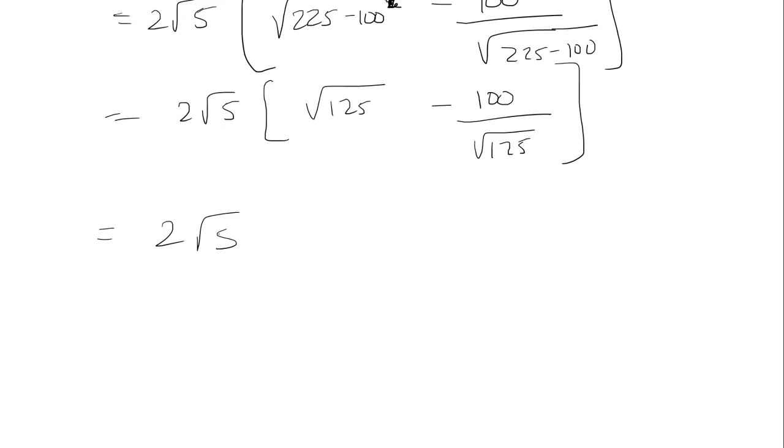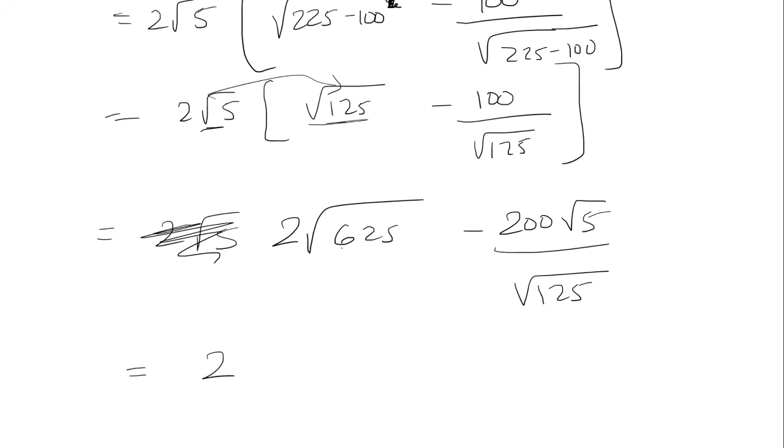So that's 2 root 5. And actually what we should do is multiply the root 5 in here. Okay, so we're going to distribute that. So that would be 2 times the square root of 625 minus 2 root 5 times 100. So it would be 200 root 5 over root 125. The square root of 625 is 25. And then we have... We can divide the root 5 with the root 125. And it's just root 25 in the bottom.